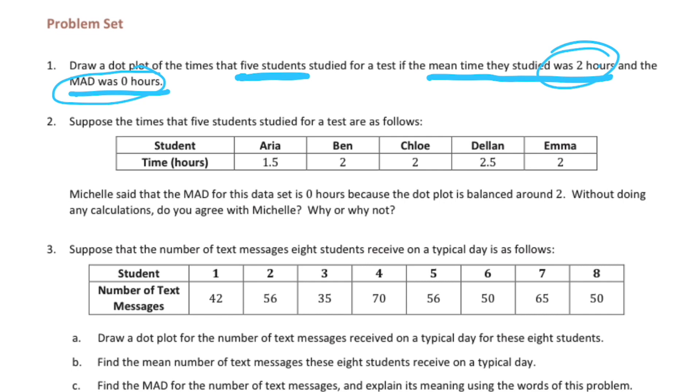So that tells me if the MAD is zero, there is no variability, which means everything is the same. And if the mean is two hours, that means that everyone, all five of them, were two hours. So our dot plot is just going to have five dots at two hours.